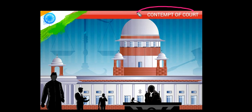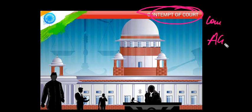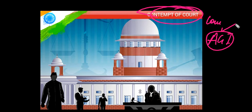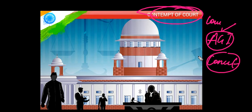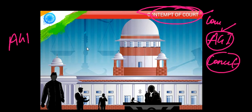You must remember: in contempt of court proceedings, when the court itself initiates the case, the consent of the Attorney General of India is not required. However, if someone else — a private party — wants to initiate contempt of court proceedings, then the permission or consent of the Attorney General of India is mandatory.